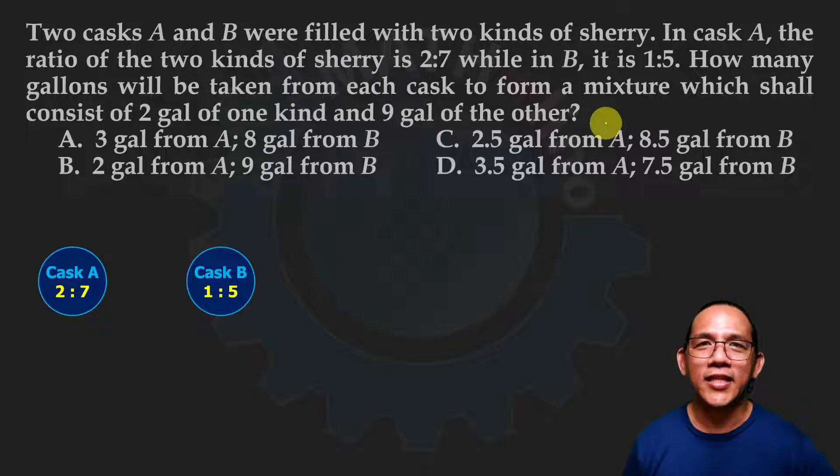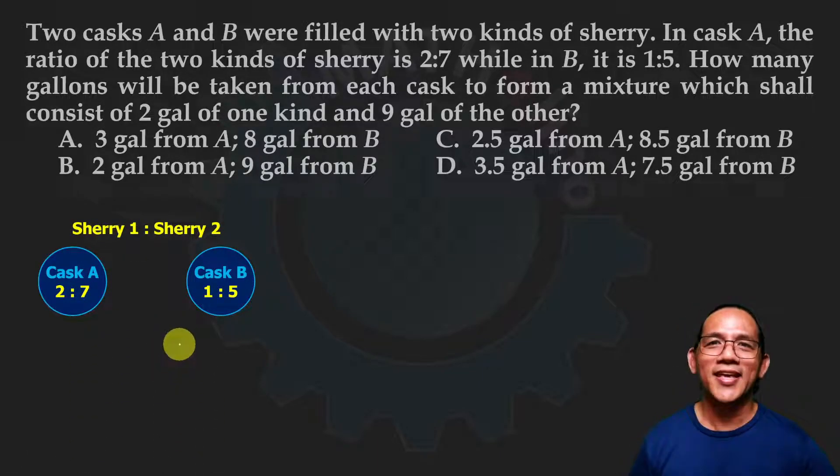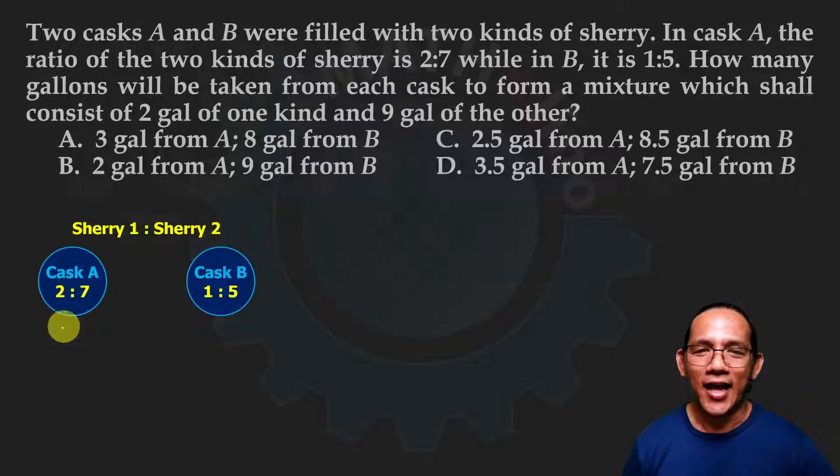Then we'll take several gallons from each cask, each barrel. How many gallons from A and how many gallons from B to satisfy having two gallons of the first kind and nine gallons of the second kind. We'll take x gallons here and y gallons there.